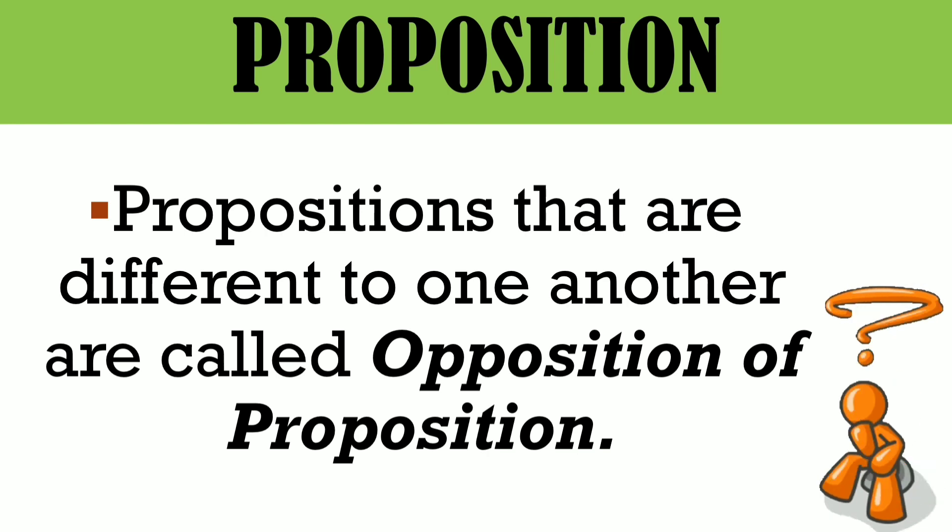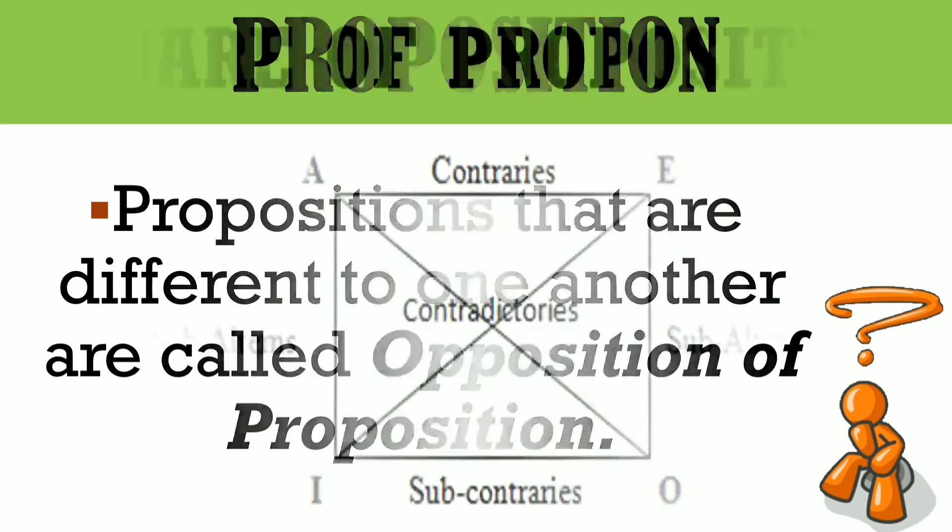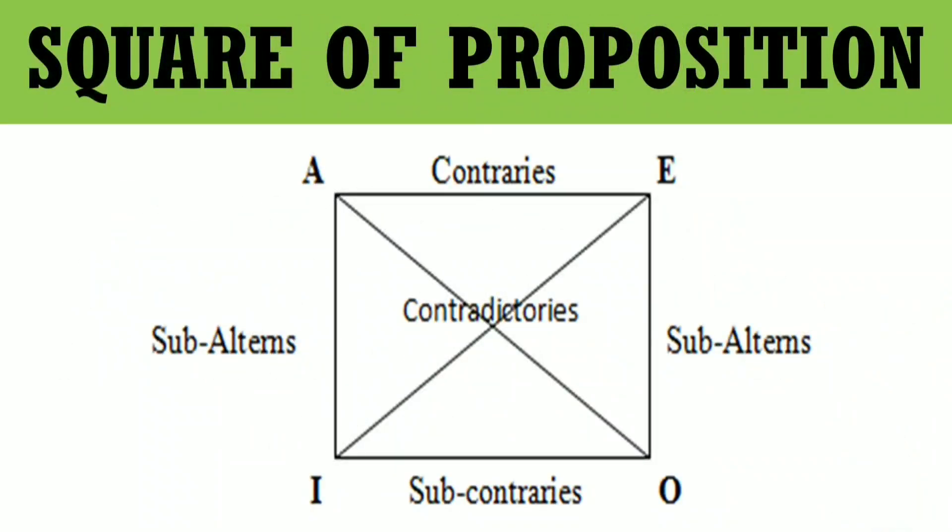There are four kinds of opposition, which we will discuss. As you can see, we have A, E, I, and O propositions. And we have the four kinds of oppositions: contraries, contradictories, subcontraries, and both sides of the square — we have the subalterns or subalternation.